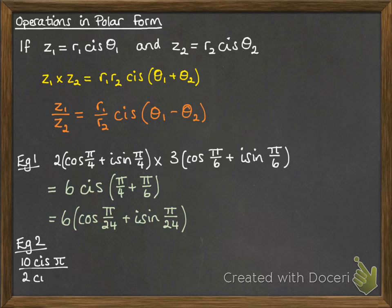Another example, if we've got a division here, then 10 divided by 2 is 5, and pi minus pi by 3 is 2 pi by 3.